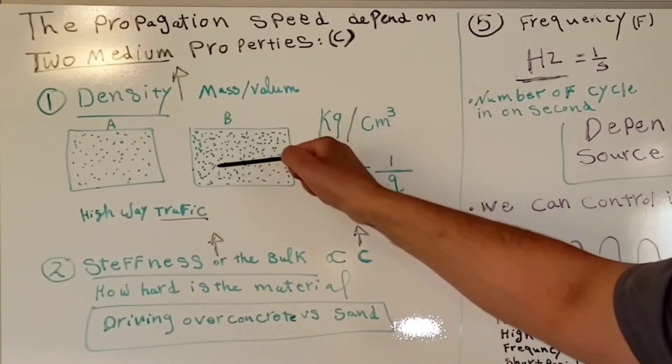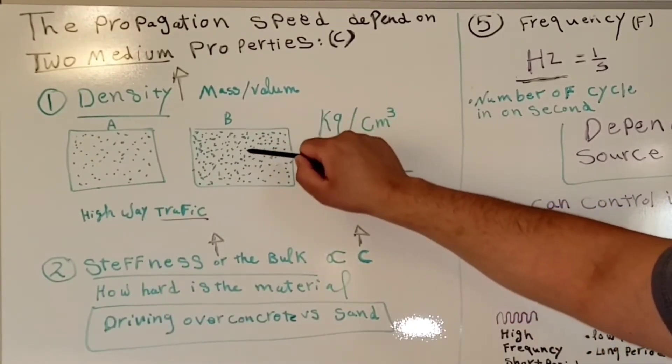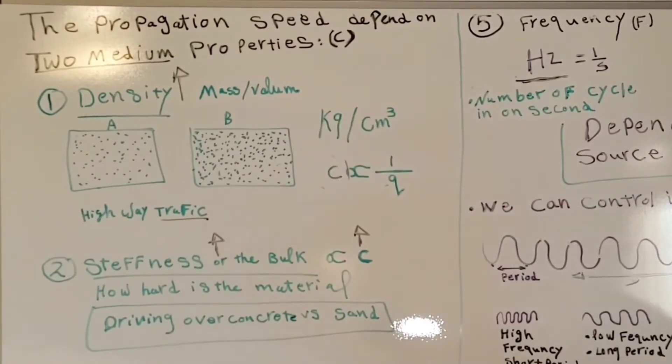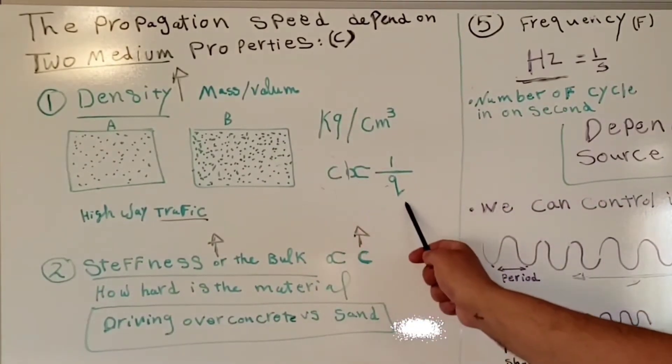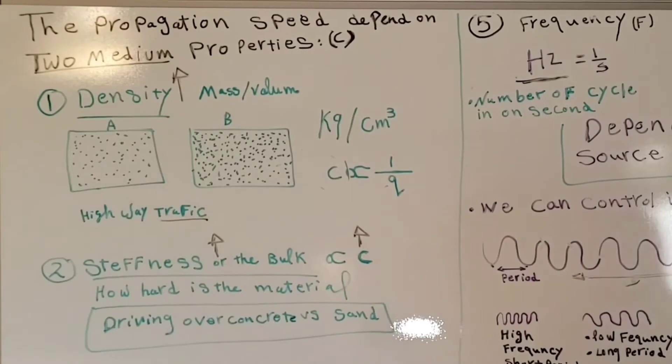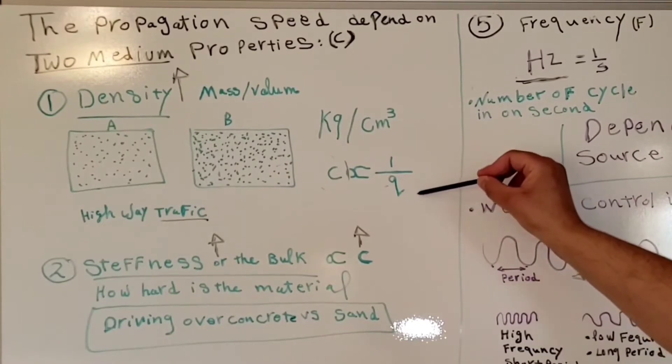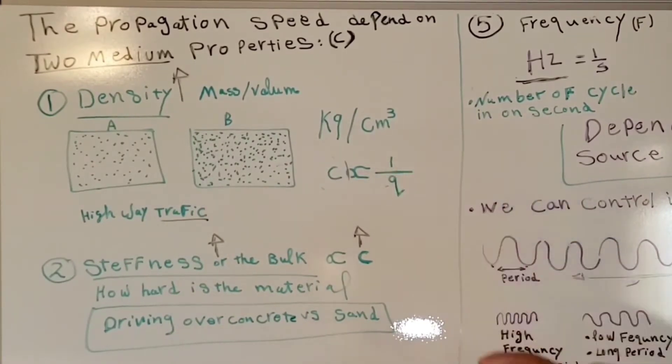Speed is inversely related to the density. Inversely related means that when density increases, speed decreases, and when density decreases, speed increases.